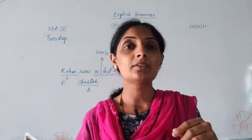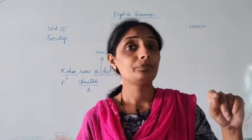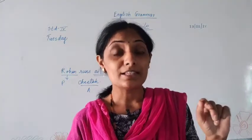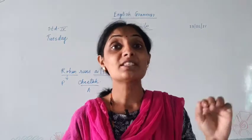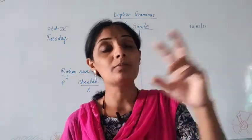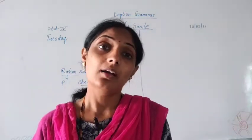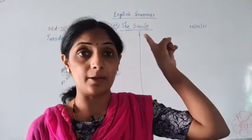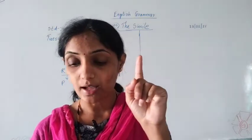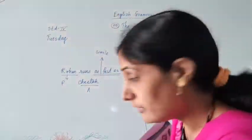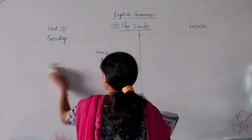As sweet as sugar — sugar is very sweet. When we have to do comparison, for example if someone is very sweet in talking, then we can say: Sima speaks as sweet as sugar. Sugar is compared with another noun, that is Sima. When we do comparison between two nouns, those words are called simile. Now, some sentences are given and we have to complete the simile in those sentences.